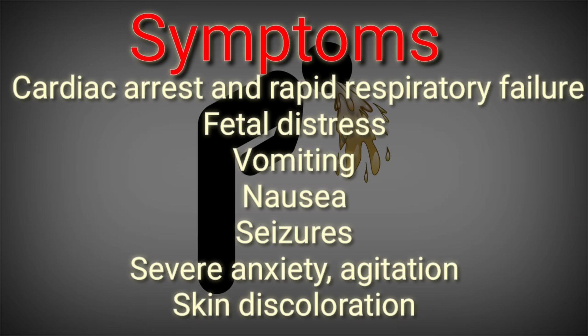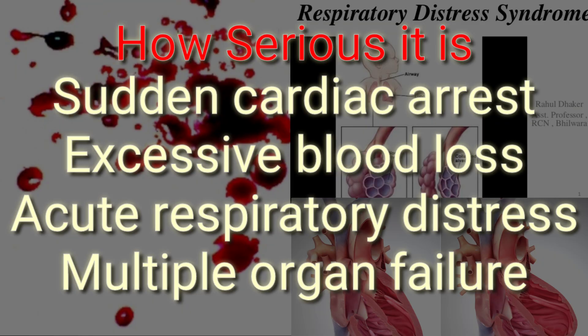Additional symptoms include decreased movement in the womb, vomiting, nausea, seizures, severe anxiety and agitation, and skin discoloration. Women who survive these events may enter a second stage called the hemorrhagic phase, which occurs when there is excessive bleeding either where the placenta was attached or, in the case of a cesarean birth, at the cesarean incision.